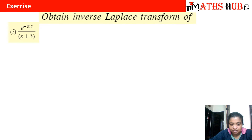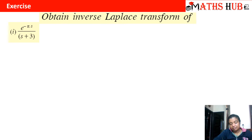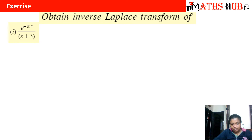Let us apply this to the first question. We have to obtain the inverse Laplace transform of e raised to power minus pi s upon s plus 3. This is a product of an exponential and 1 upon s plus 3. Whenever there is a product of an exponential term, it immediately indicates that we use the second shifting property.